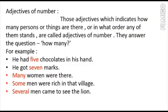The next kind of adjectives is adjective of number. Earlier we have read about adjective of quantity. Adjective of quantity and adjective of number are quite similar. The only difference is that adjective of quantity refers to how much, and adjective of number refers to how many. How much means what is the amount or quantity, and how many means what is the number.